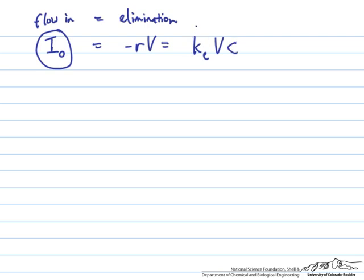Where ke is again 0.2 reciprocal hours, the volume is 40 liters, and the concentration is 4.5 milligrams per liter. Therefore for the IV, when we solve for that, we get 36 milligrams per hour that we need to administer at long times.